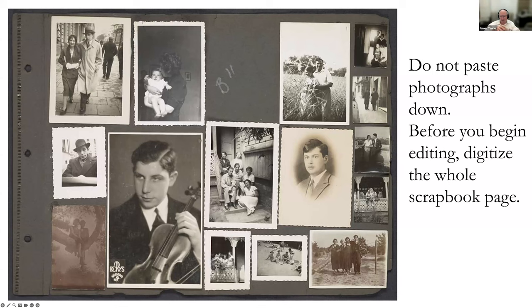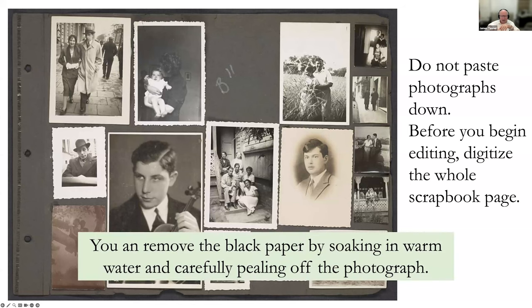By taking photos out of the album — getting them off the black paper using a little water at a time on the back and using something like a plastic spoon to scrape off the black — you can read the caption or whatever was written on the back. Maybe there's nothing written on the back and it doesn't help, but it's a way of getting more information. But before you do that, digitize the whole scrapbook page first, because the arrangement of the photos and other information on the page can sometimes tell us who these people are.